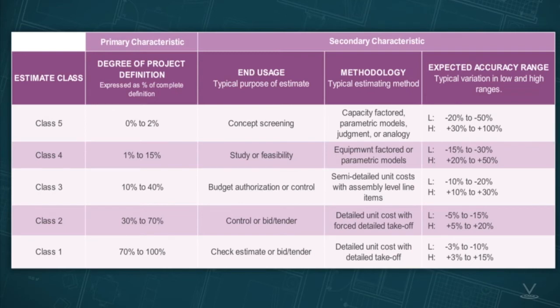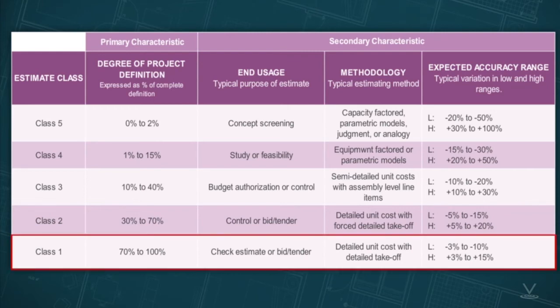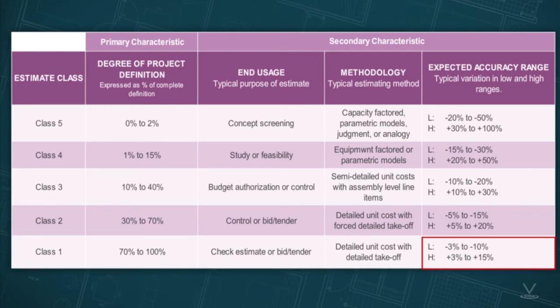As your project becomes more defined, potential risks are exposed and you become more educated on the overall project. This drives your knowledge closer to a Class 1 estimate. Now your estimate may be off as much as 10% on the low side or 15% on the high side. On a very large, several hundred million dollar project, that's a significant amount.